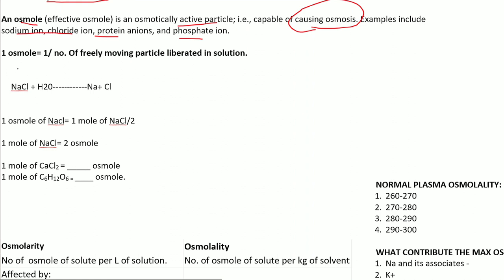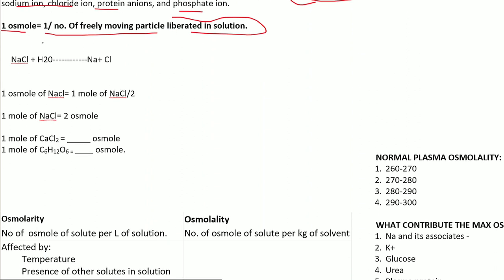One osmol is equal to 1 divided by the number of freely moving particles liberated in a solution. For example, if sodium chloride is dissolved in water, it splits into two parts: sodium and chloride.